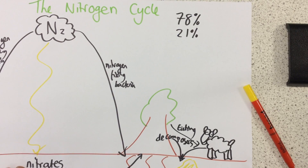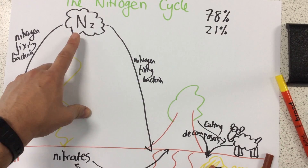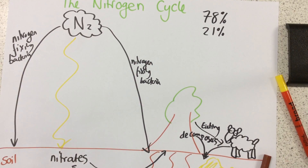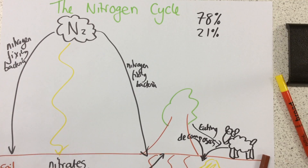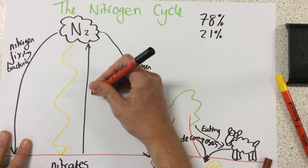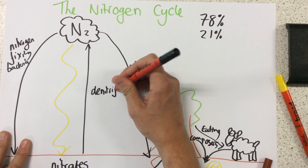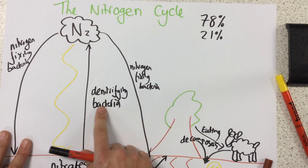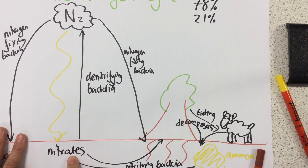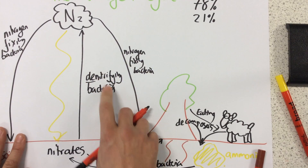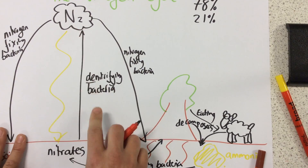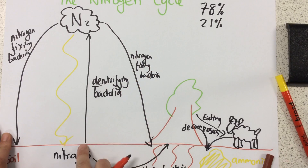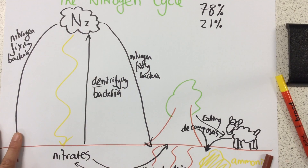We have nearly finished. The only thing we can see is that nothing is returning any nitrogen to the atmosphere. Our last type of bacteria is denitrifying bacteria. It denitrifies — we start off with a nitrate, and because we have denitrifying bacteria, we no longer have nitrates. This returns the nitrogen into the atmosphere. Notice there's only one thing that's returning nitrogen to the atmosphere.